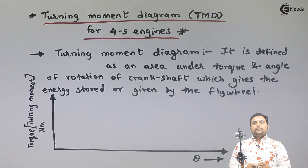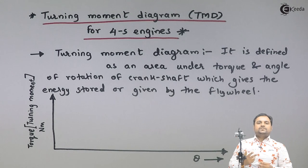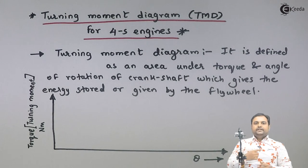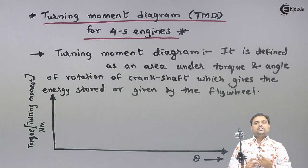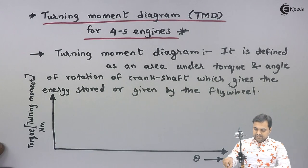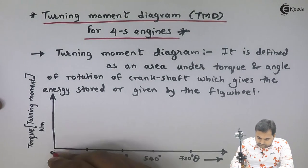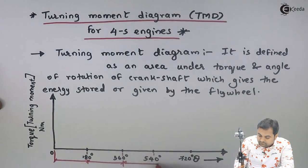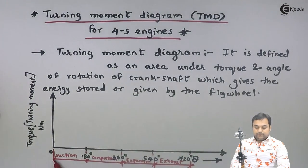For a four-stroke engine, power is produced in two revolutions of the crankshaft. The four processes — suction, compression, expansion, and exhaust — are completed in two revolutions, which equals 720 degrees. Each stroke therefore requires 180 degrees of crankshaft rotation.